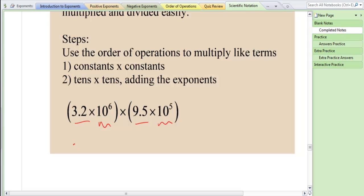So here I'm going to rewrite this as 3.2 times 9.5, and I'm going to work with those constants, times 10 to the sixth times 10 to the fifth, and I'm going to work with the two same bases and use my exponent rules. This is really just four things being multiplied together, and I'm just rearranging the order to make the math easier.